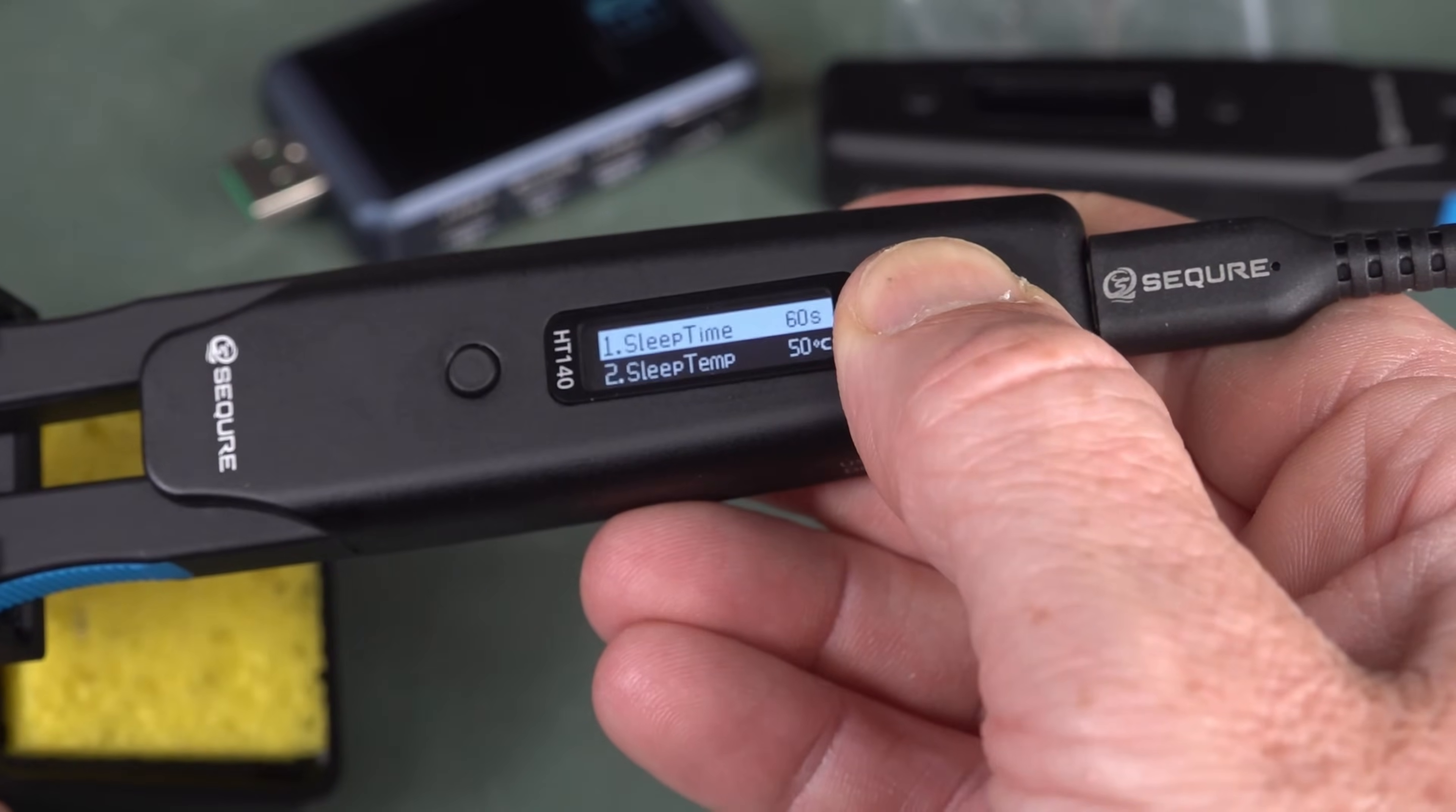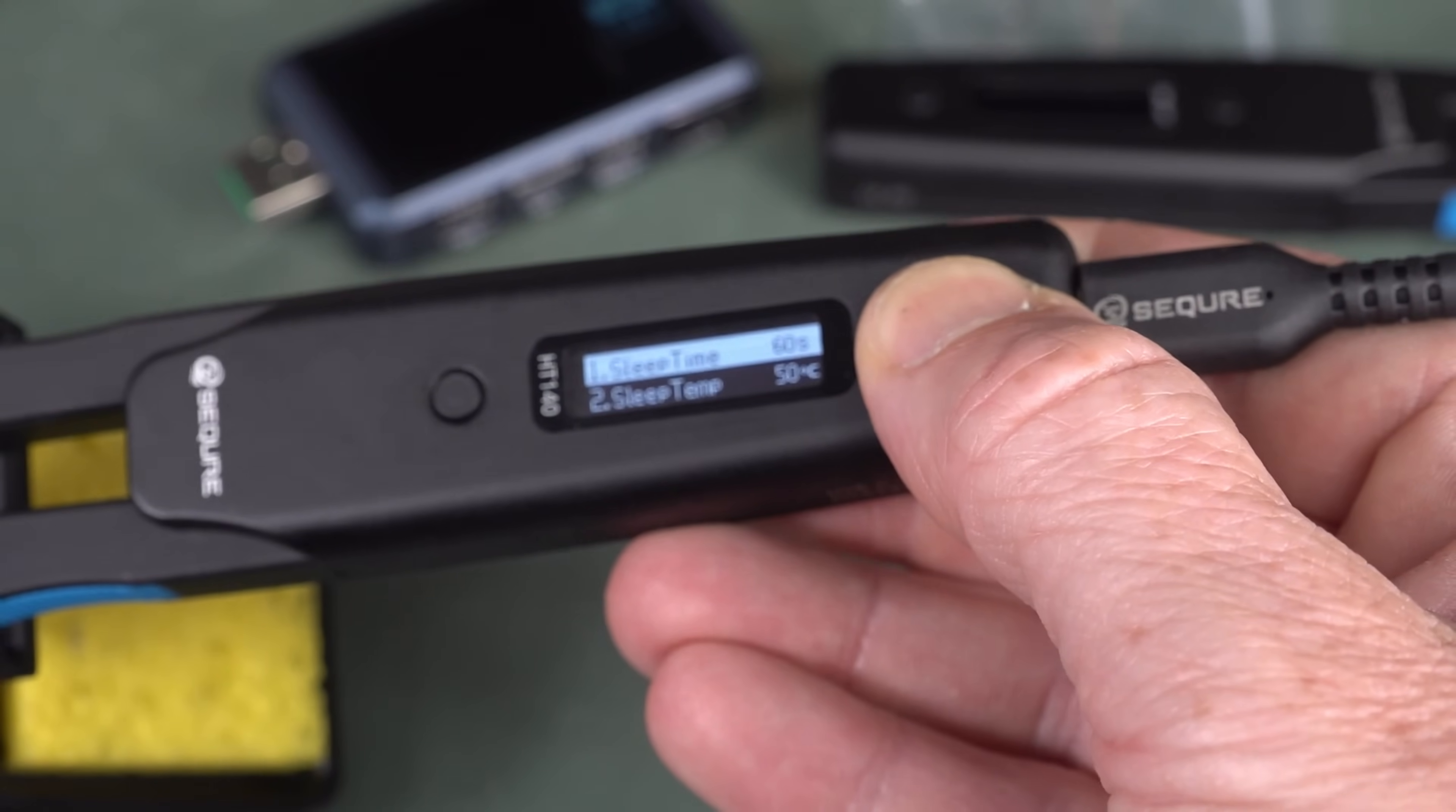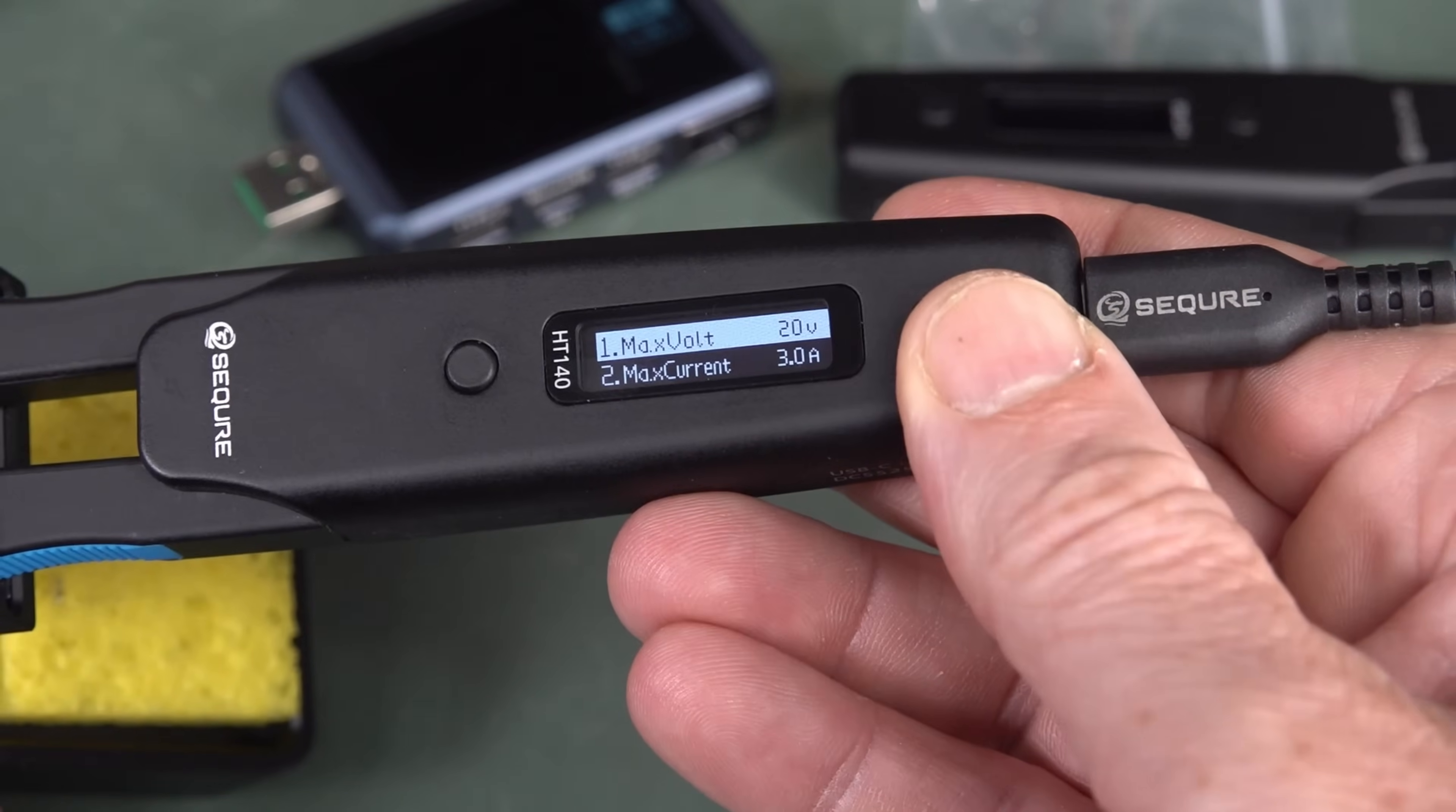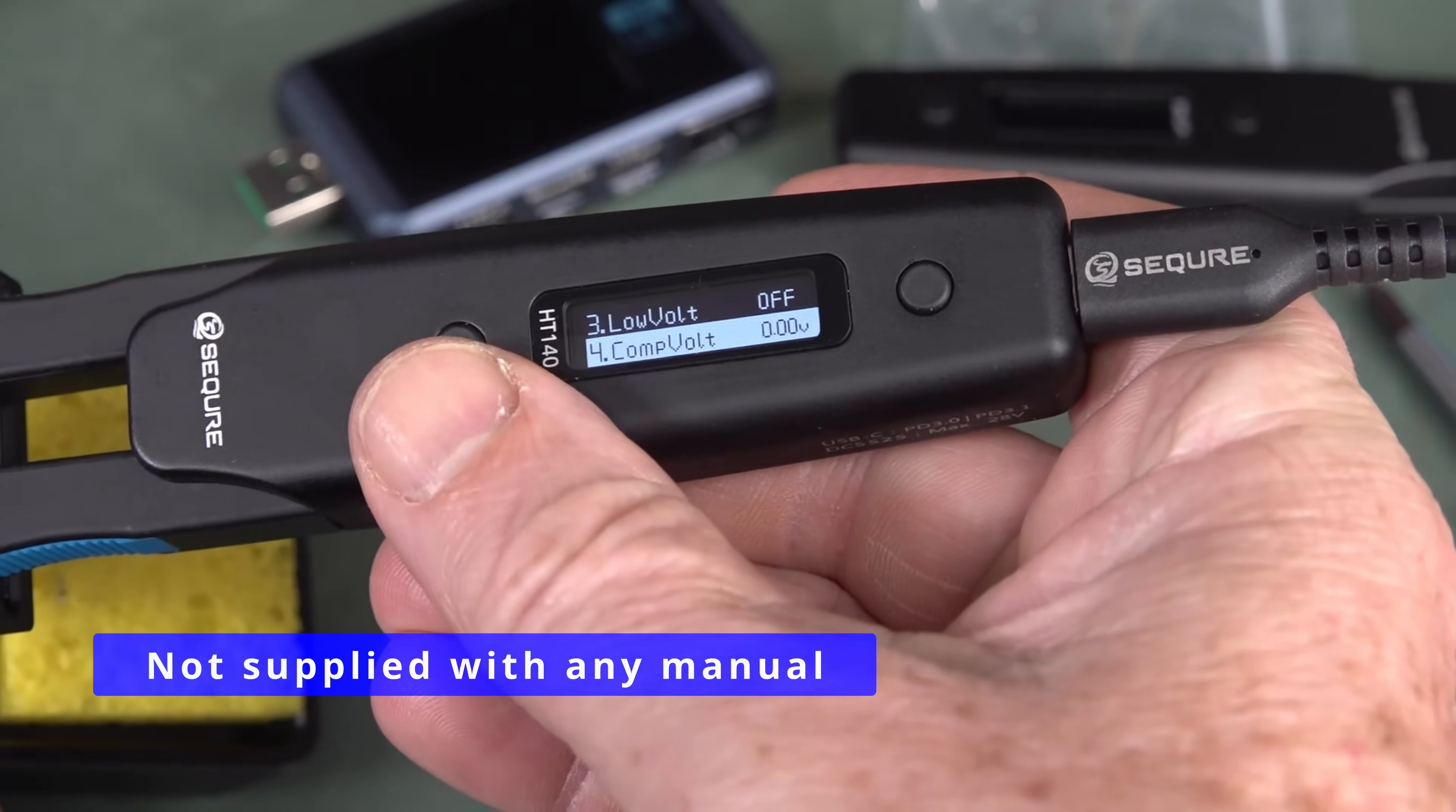So can we adjust that idle time there? Let's have a look. Sleep time, 60 seconds. There you go. Sleep temperature, 50 degrees. Idle time, 360 seconds. And screen on open, I guess. So you can set all your idle times and your sleep times. That is neat. I like that. And you can set your maximum voltage there and maximum current. Neat. Low voltage. I guess it'll cut out if you've got low voltage. Compensation voltage. Comp voltage. Not sure what that is. Have to RTFM.